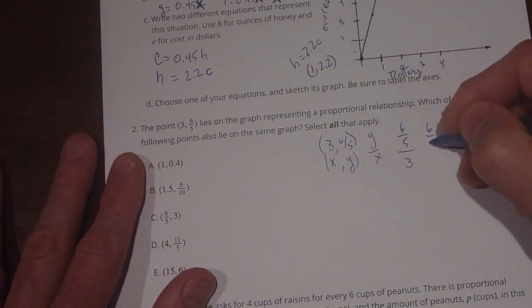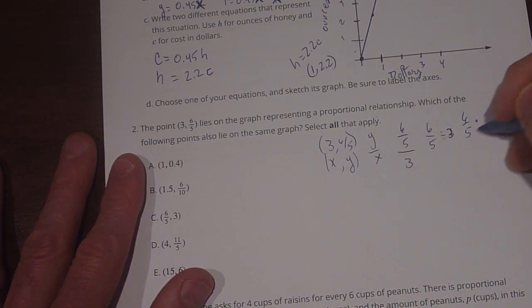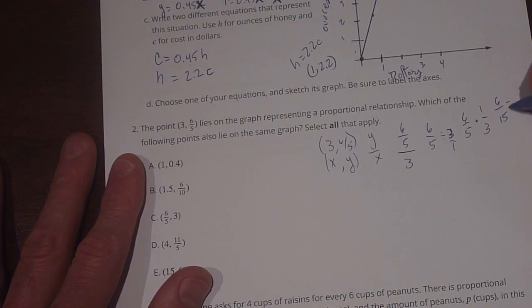So 6 fifths divided by 3. We could write that as 6 fifths divided by 3, and that's also going to equal 6 over 5 times, because this is 3 over 1, we reciprocate and we get 1 third. So 6 over 15, they both have a factor of 3, so we can simplify that to 2 fifths.